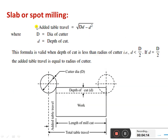For slab or peripheral milling, as seen in the diagram, the width of the work piece is reduced. The Added Table Travel = √(D·d − d²), where D is the diameter of the cutter and d is the depth of cut. This added table travel applies at both ends, and together with the job length, gives the total table travel.